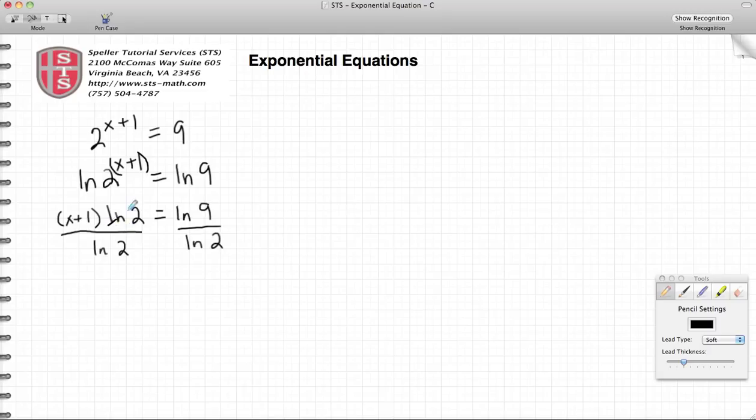Natural log of 2 divided by the natural log of 2 simplifies down to 1, and that just leaves us with x plus 1 is equal to the natural log of 9 divided by the natural log of 2.